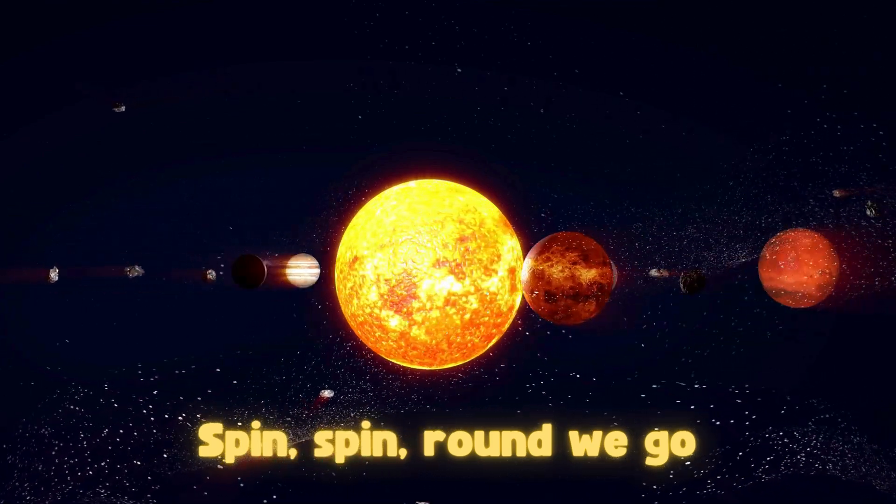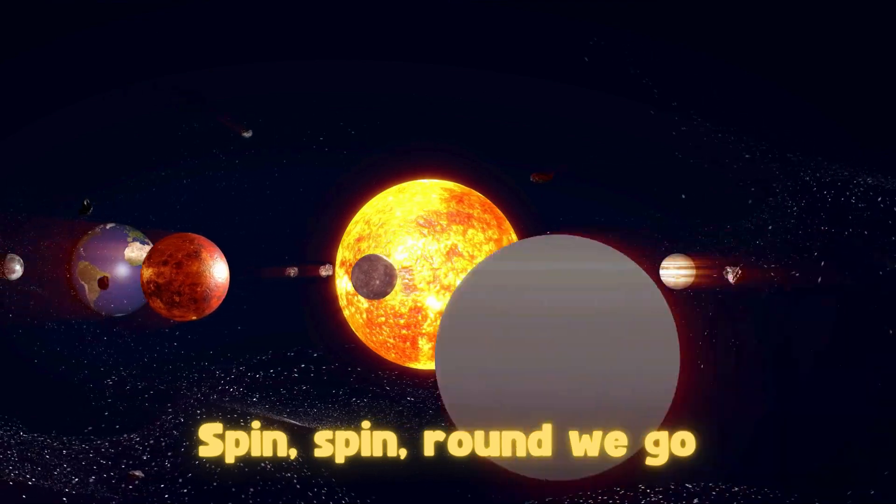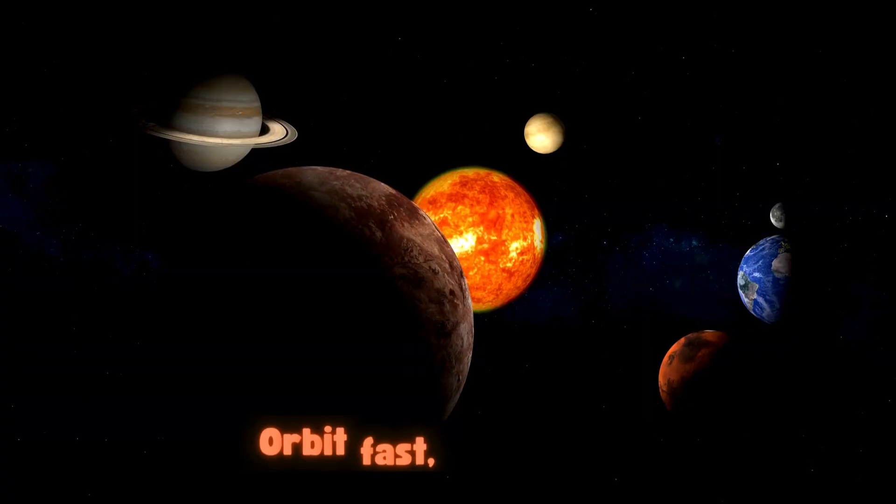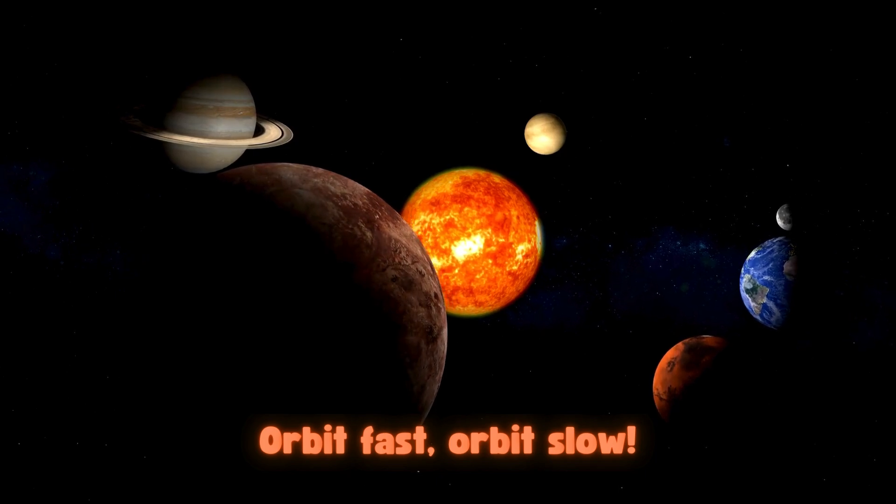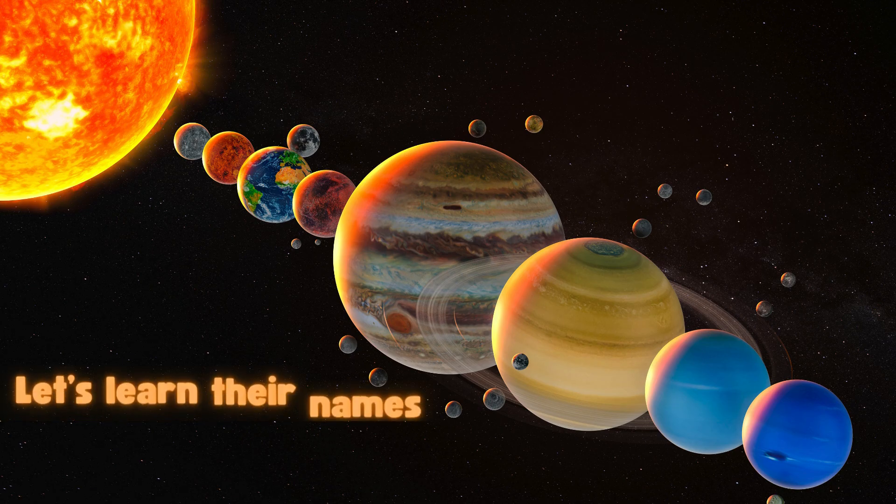The Planet Dance. Spin, spin, round we go. Orbit fast, orbit slow. Eight big planets in the sky. Let's learn their names.